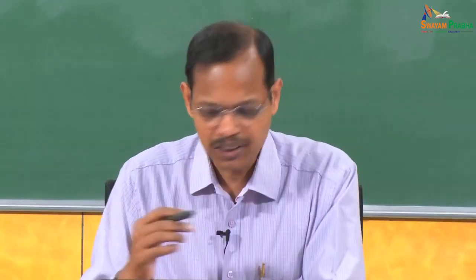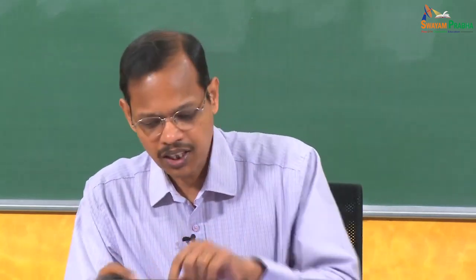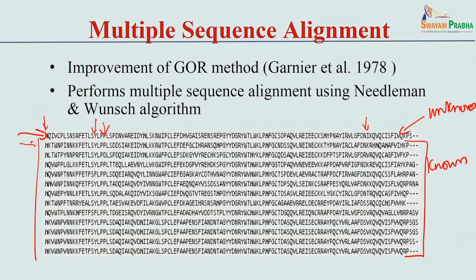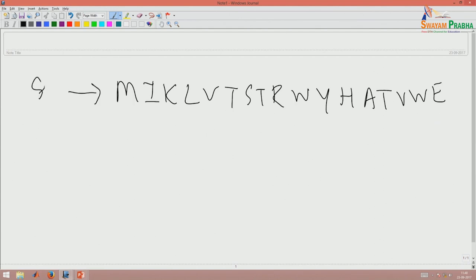There is another way to use multiple sequence alignment for secondary structure prediction. If you have a multiple sequence alignment where the query sequence is unknown, you search your sequence using BLAST against a dataset of PDB sequences with known structures. If you perform this alignment, the first sequence is unknown while all other sequences have known secondary structures.